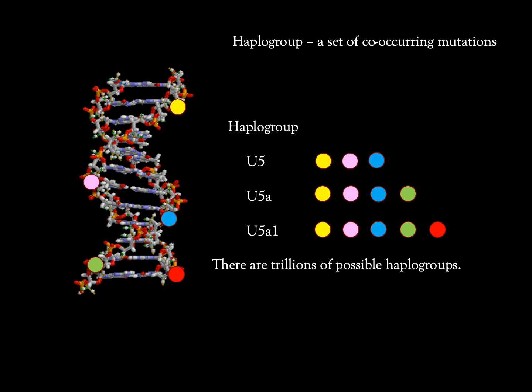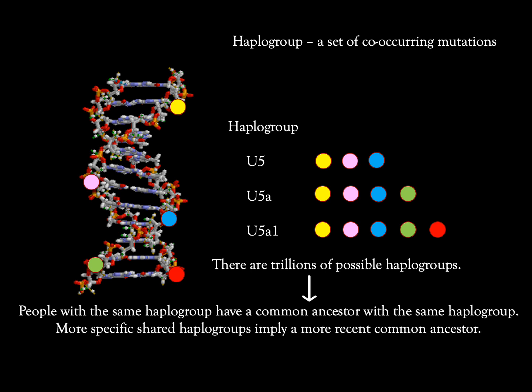There are trillions and trillions of possible haplogroups. People with the same haplogroup have a common ancestor with the same haplogroup. More specific shared haplogroups imply a more recent common ancestor.